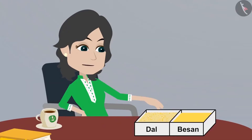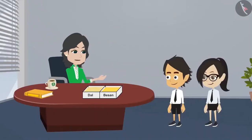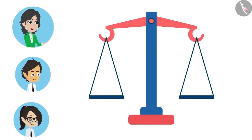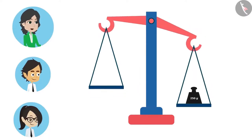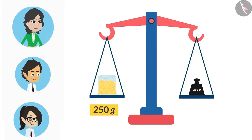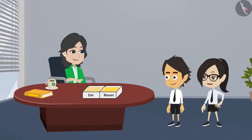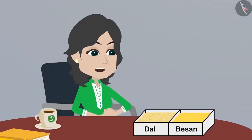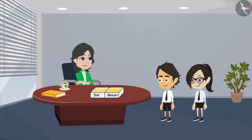The weight of this dal is 500 grams. Now to divide this into two equal parts, we will measure 250 grams. For this, we will keep a 250 gram weight on one side of the scale and keep adding dal on the other side until both sides are balanced. Now there is 250 grams of dal on one side of the scale. In this way, we can divide solid objects into equal halves. Some objects have to be measured using weights to divide them. Now it is time for your class, so please go.